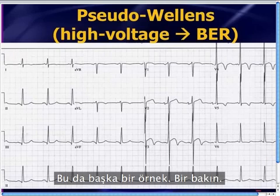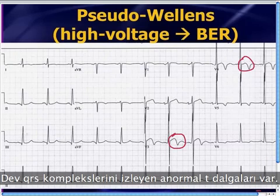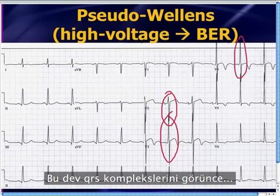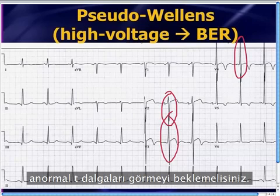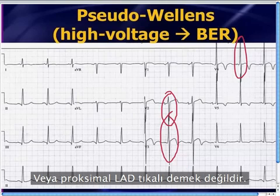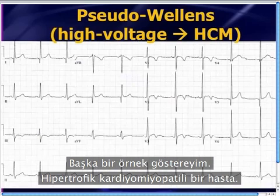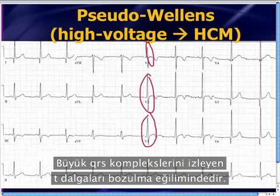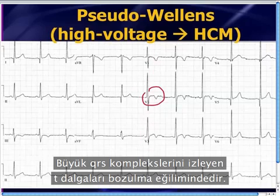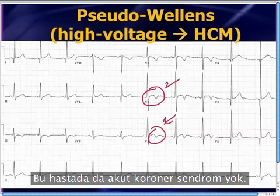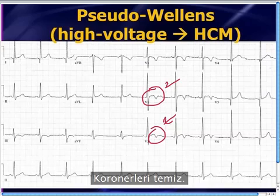Here's another example — there are abnormal-looking T-waves following giant QRS complexes. When you see these giant QRS complexes, you should expect to see abnormal T-waves. This is not specific and does not mean the patient has Wellens or a proximal LAD occlusion. Here's a patient with hypertrophic cardiomyopathy. HCM gives you very large QRS complexes, and when you have very large QRS complexes, the subsequent T-waves tend to be very messed up — in this case they're biphasic. This patient also has clean coronaries and is not suffering from ACS. Those biphasic T-waves mean nothing.